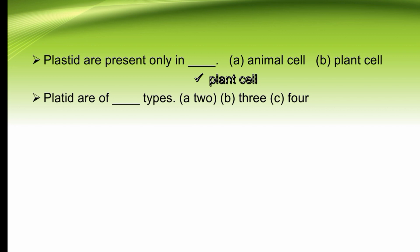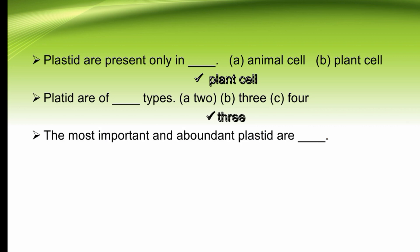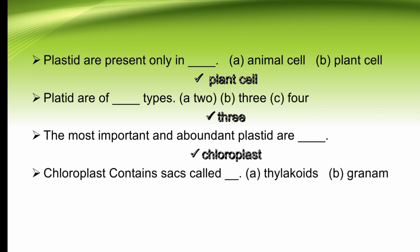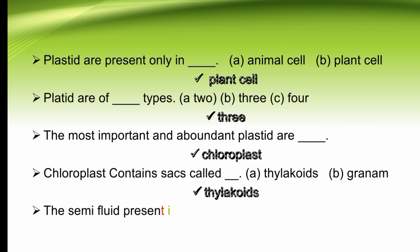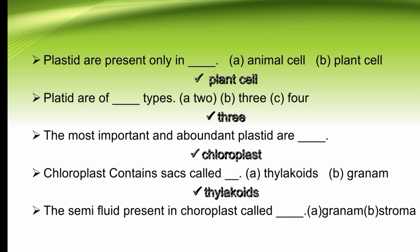Plastids are of dash types — two, three, or four. Plastids are of three types. The right option is B. The most important and abundant plastids are chloroplasts. Chloroplasts contain sacs called dash — thylakoids or granum. Chloroplasts contain sacs known as thylakoids. The right option is A. The semi-fluid present in chloroplasts is called dash — granum or stroma. The semi-fluid present in chloroplasts is called stroma. The right option is B.